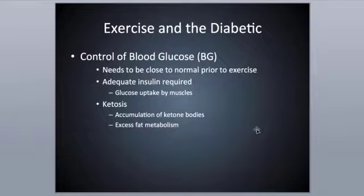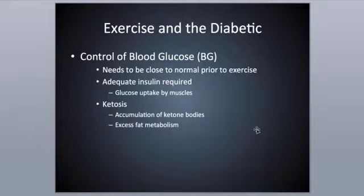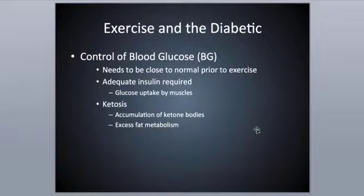For exercise in the diabetic, the main focus is to control blood glucose before, during, and after exercise. It needs to be as close to normal as possible prior to exercise, since we'll be using a lot of blood glucose during activity. Adequate insulin is required, especially in Type 1 diabetics. If not controlled properly, ketosis could occur due to accumulation of ketone bodies from excess fat metabolism.